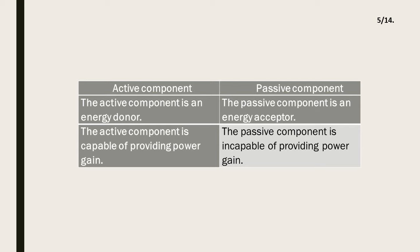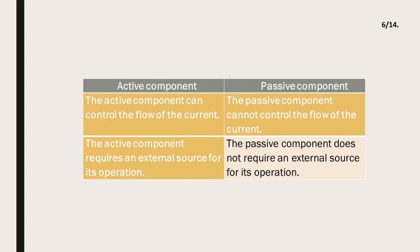The active component is capable of providing power gain; the passive component is incapable of providing power gain. The active component can control the flow of current; the passive component cannot control the flow of current. The active component requires an external source for its operation; the passive component does not require an external source for its operation.